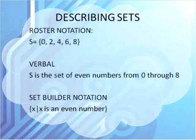We're going to take a look at the notations used to describe sets. Roster notation is writing the set with the braces. 0, 2, 4, 6, 8. And usually it has a letter as its name, especially with what we're working with. Verbal notation for this same set would be to say S is the set of even numbers from 0 through 8.